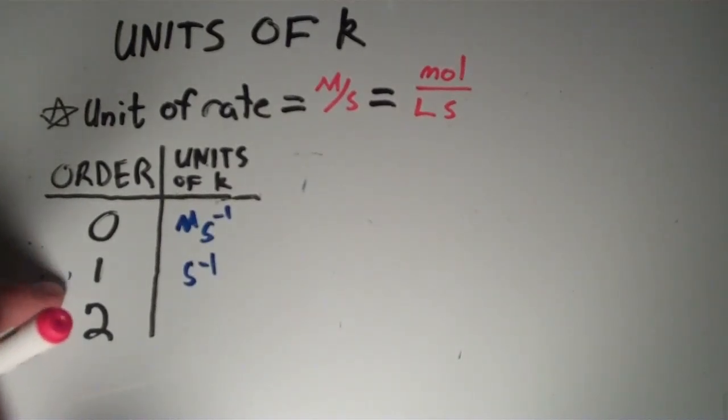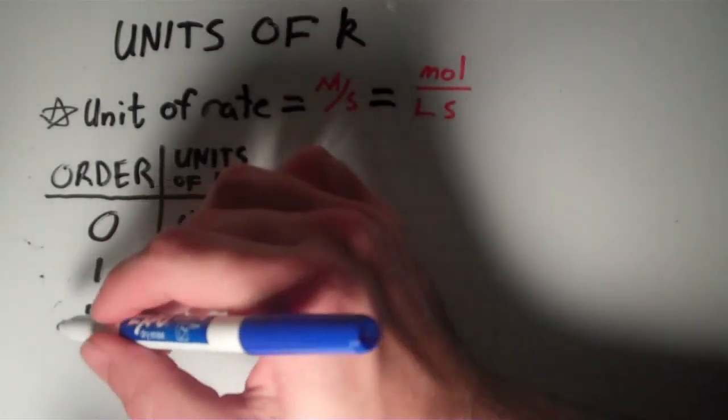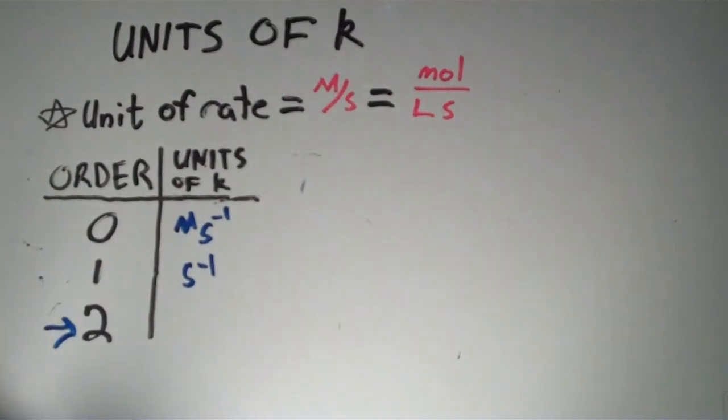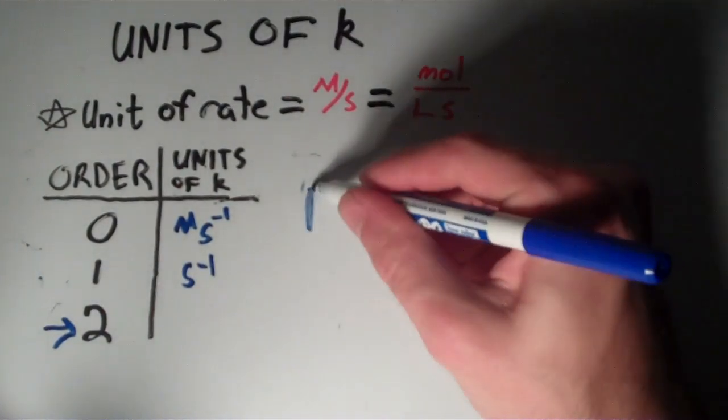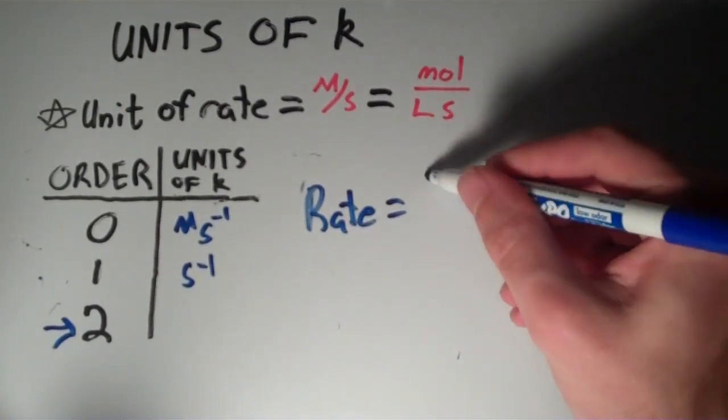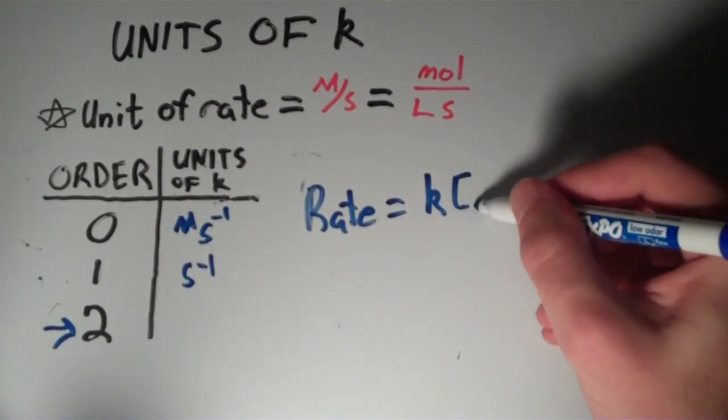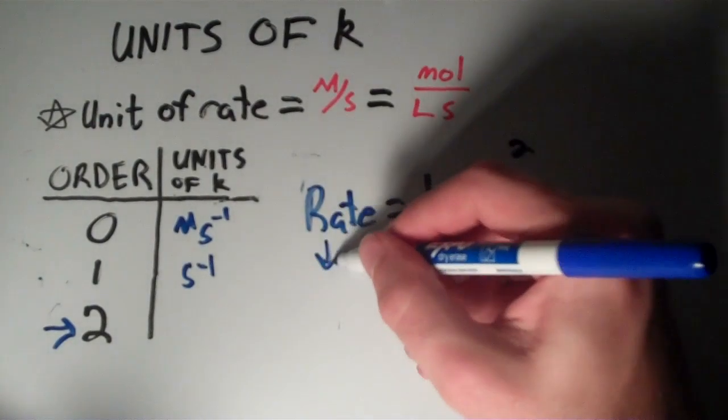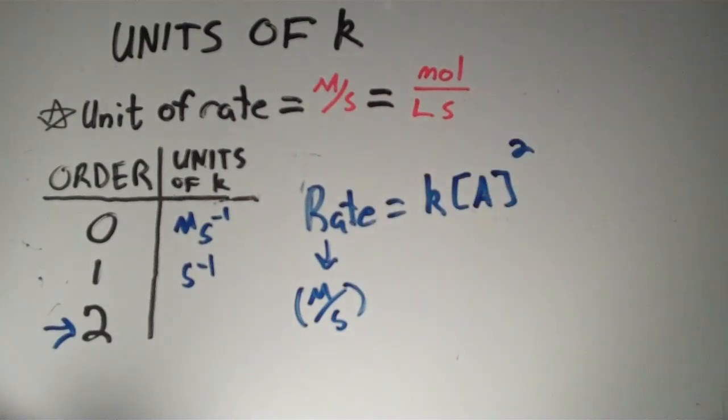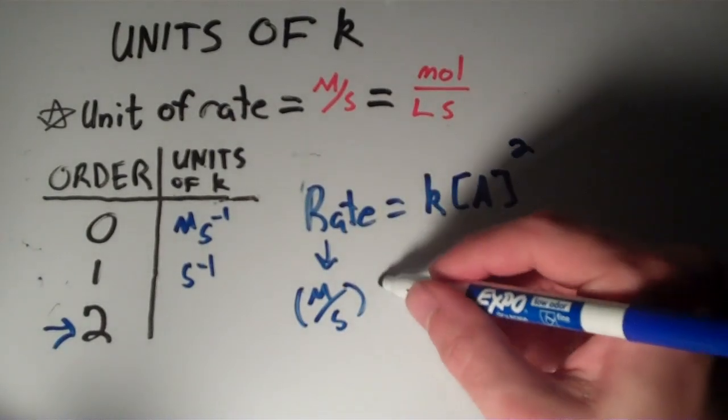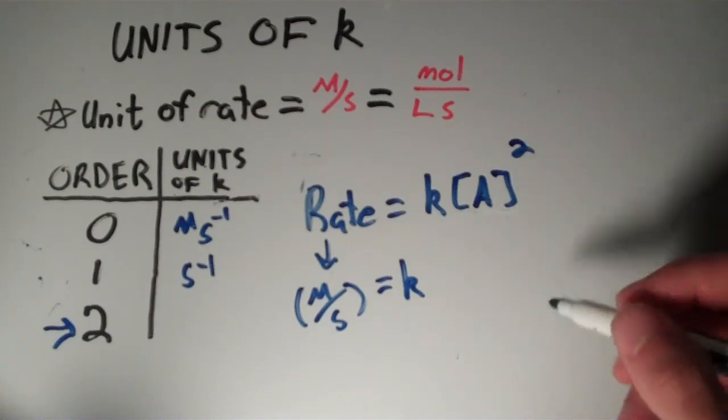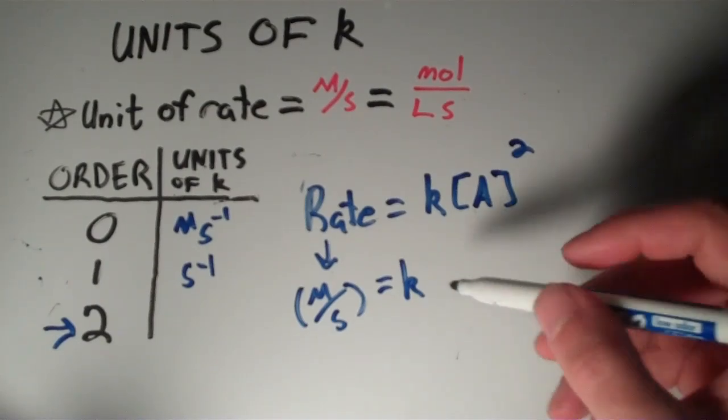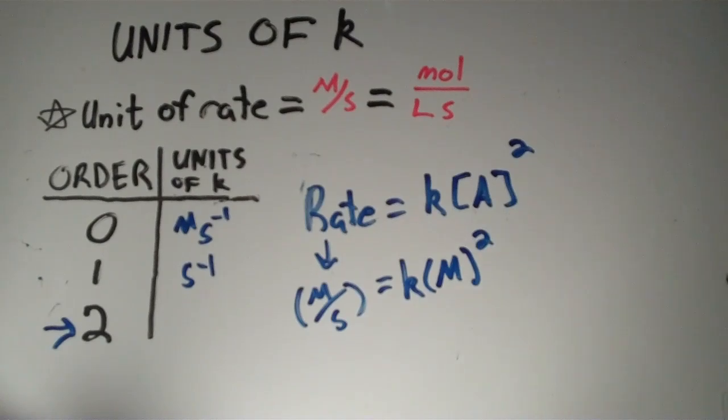Now let's look at a second-order reaction. The rate law is rate equals K times the concentration of A squared. The units of rate are still molar per second. We're taking K and multiplying by a concentration squared, so molar squared.